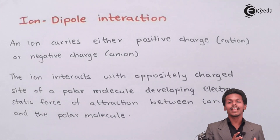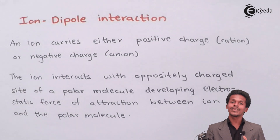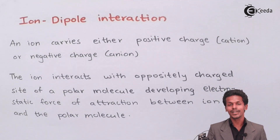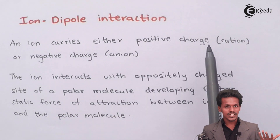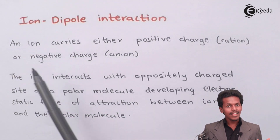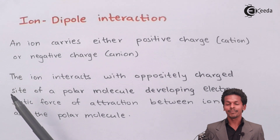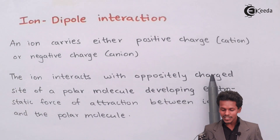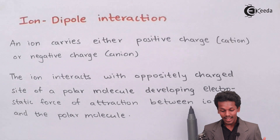Ion-dipole interaction occurs between an ion and a dipole molecule — a molecule which has a dipole moment. This kind of interaction takes place between an ion and a dipole. The ions interact with the oppositely charged side of a polar molecule, developing an electrostatic force of attraction between the ion and the polar molecule.